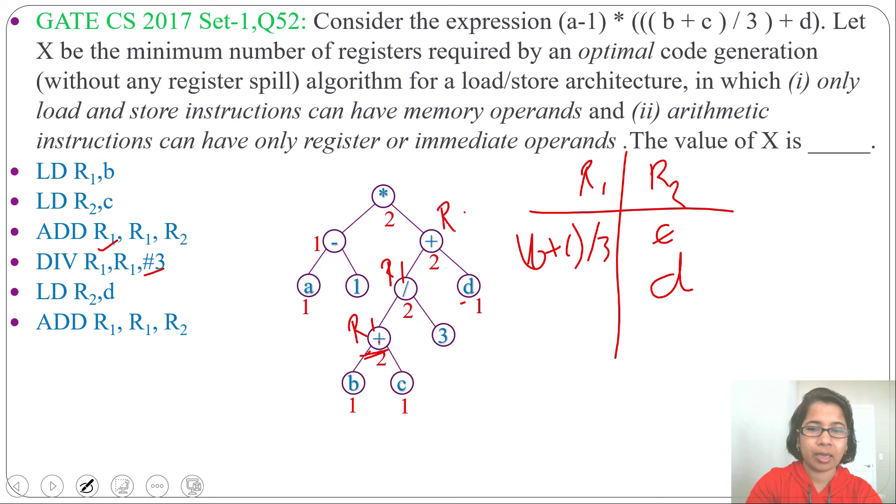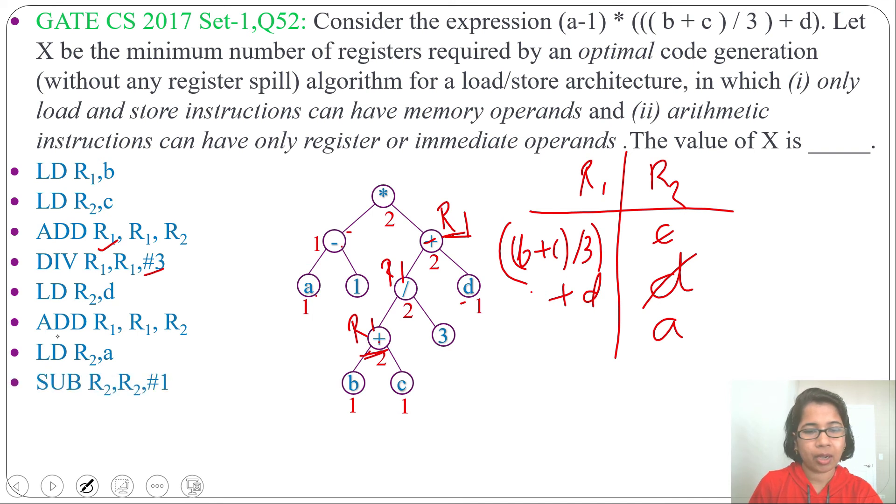Next, we need to do A minus 1. For that, we need to load A into 1 register. This result is in R1, so cannot free R1. Let me load A into R2. So load R2 A. Next, I need to do this subtraction. A is in R2, so sub R2 R2 #1. Number 1 we can write by the hash symbol. Now this result is in R2.